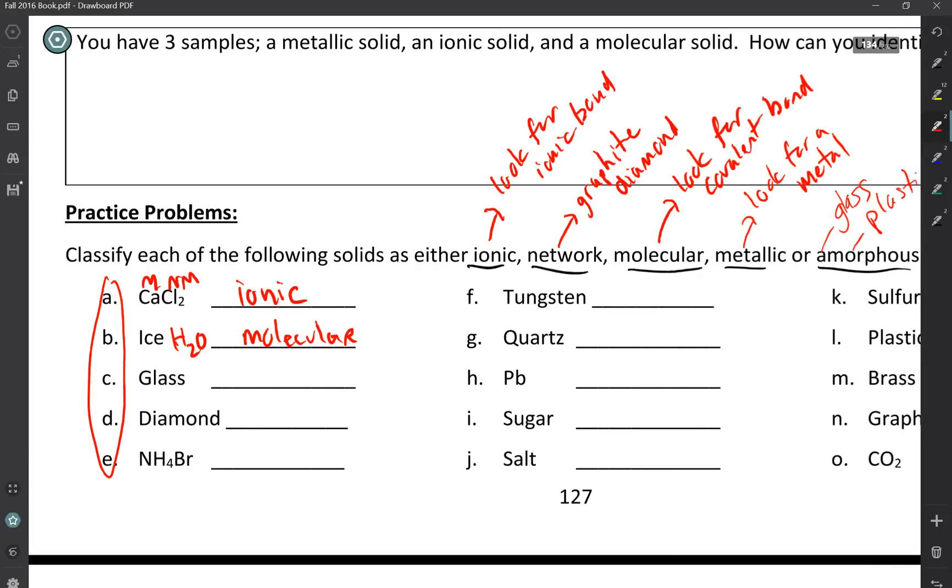Glass. Glass is one of the examples that we talked about at the beginning of the lesson. And glass is always going to be amorphous. For better or for worse, it's just one you kind of have to memorize. Diamond. There's another that you just have to memorize. This is going to be a network covalent.